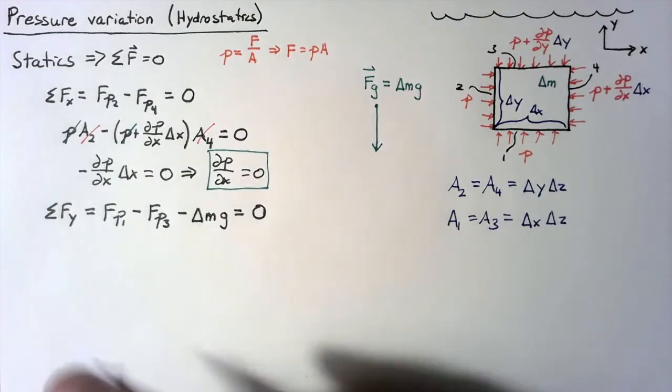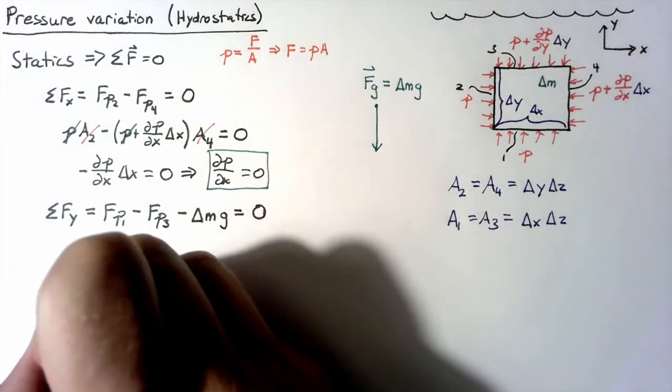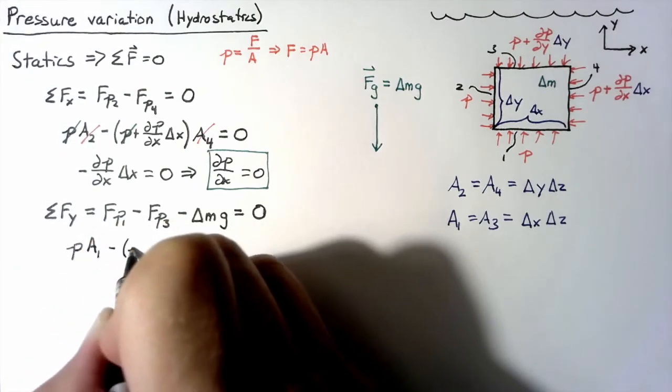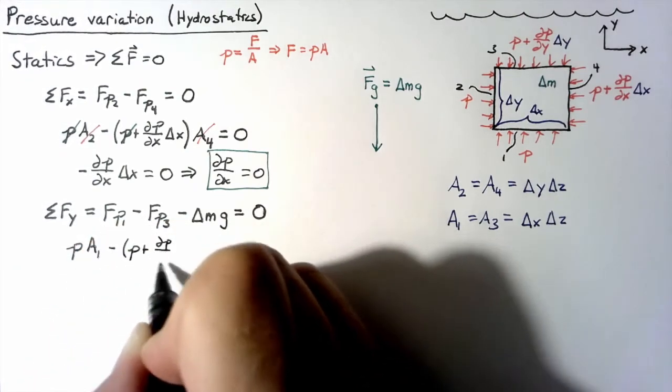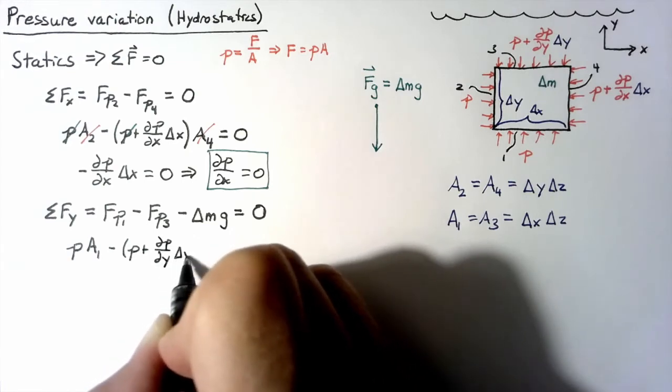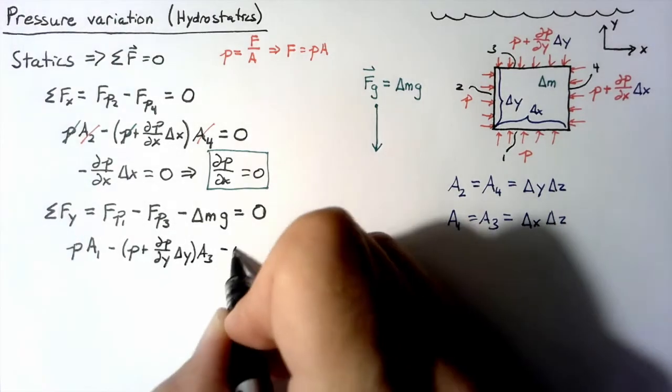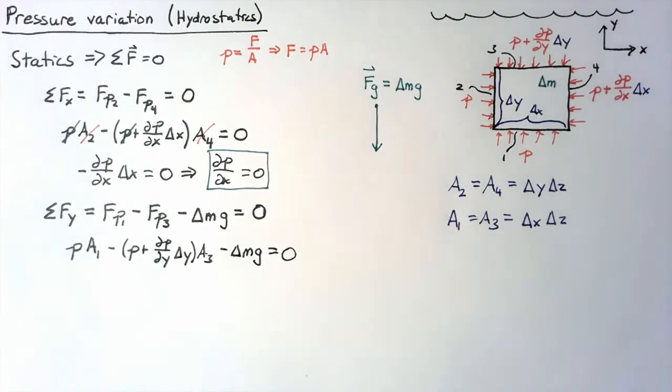We're still in statics, so the sum of the forces is equal to 0. All right, so let's split up our pressures just as we did before. So the pressure multiplied by a1 minus the pressure plus dp dy times delta y multiplied by a3 minus our gravity component.